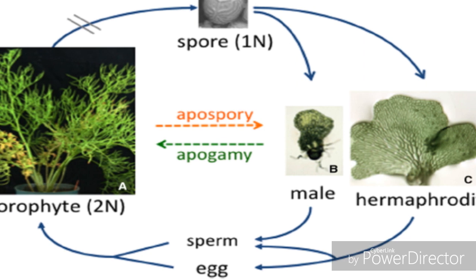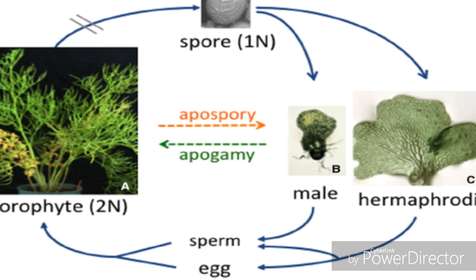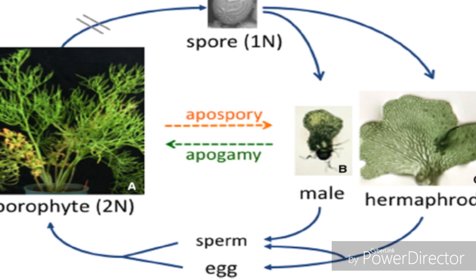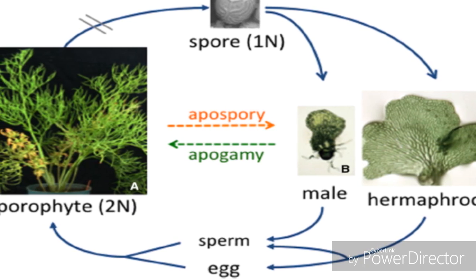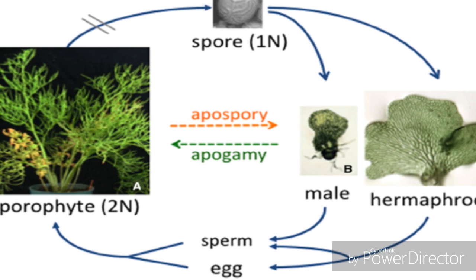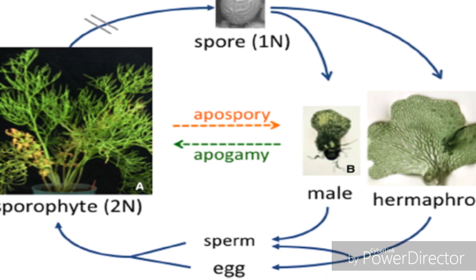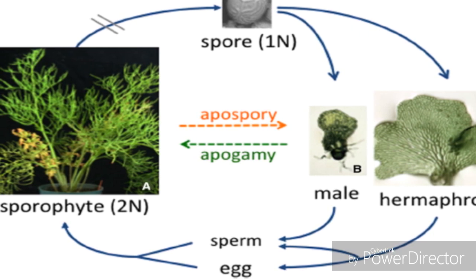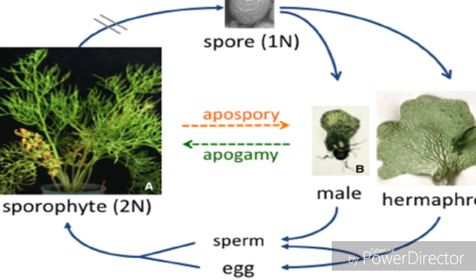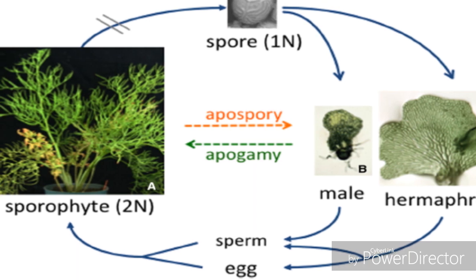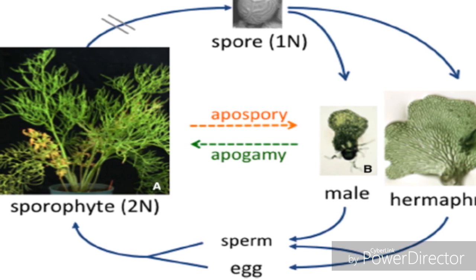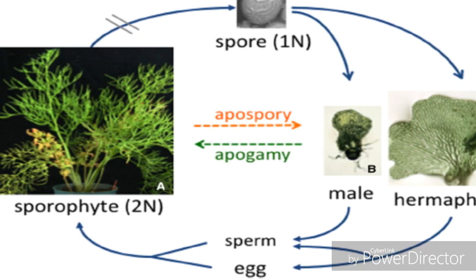According to your guess, you might think apogamy means development of a gametophytic plant because the last word sounds like 'gamey,' but in this case it is totally opposite. Apogamy means development of the sporophyte, and apospore means development of the gametophyte. Now I am going to elaborate.